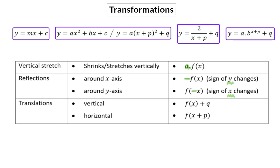Lastly, we had a look at two different translations. Firstly, a vertical translation, moving the graph up or down, and this, you should already know, is indicated by adding a constant value at the end of the equation. We named this value q. Then there's also a horizontal translation, moving left and right. This means the value of x changes by adding a constant to x, and we call that the p-value.